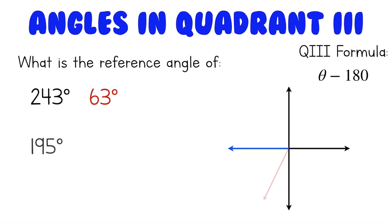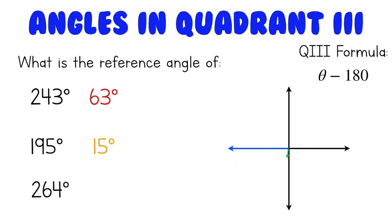What about a 195 degree angle? We'll do 195 degrees minus 180 degrees, which gives us a 15 degree angle. And how about 264 degrees? We'll do 264 degrees minus 180 degrees, which gives us 84 degrees — that's our reference angle.